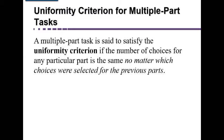The first thing you need to understand is that when we have a multiple-part task, like a three-part task, it's said to satisfy the uniformity criterion if the number of choices for any particular part is the same no matter which choices were selected for previous parts.